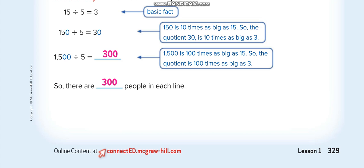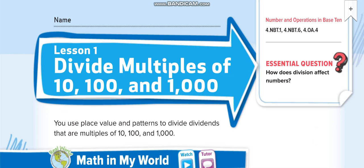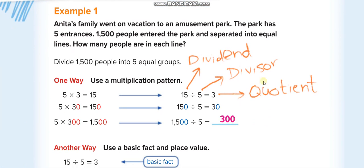Page number is 329. When we divide two numbers and we get an answer, the first number, always the big number, we call it dividend. The second number, the smallest one, we call it divisor. And the answer of division is known as quotient.